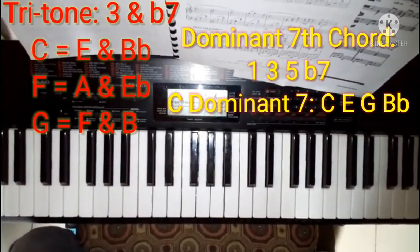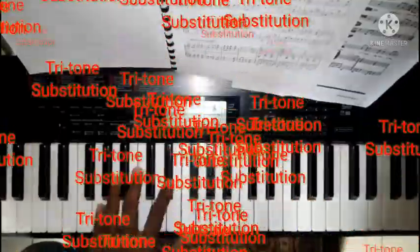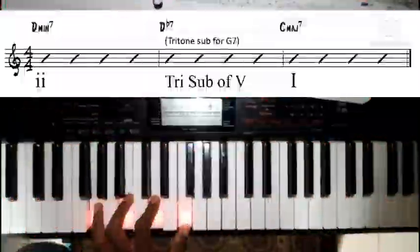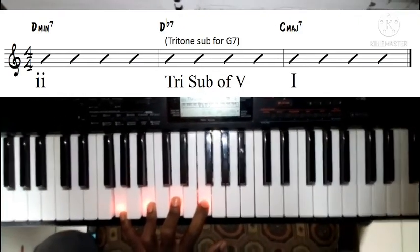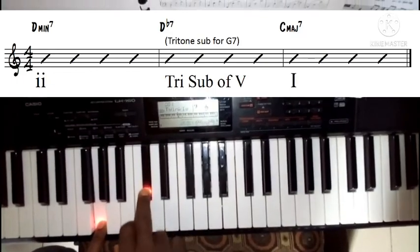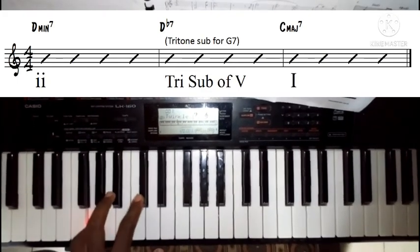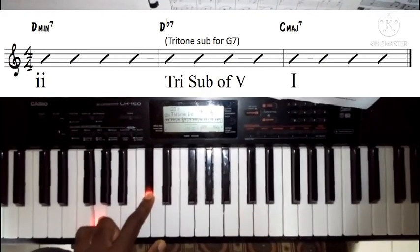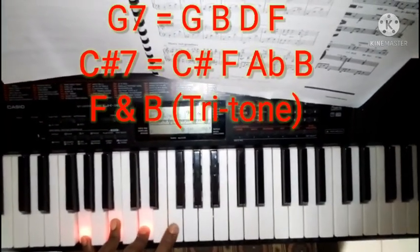The second way we can use it is called tritone substitution. Basically, the tritone for C is F sharp. Now let's look at our dominant chord — talking about the G7 for the key of C. Looking at the dominant, the tritone for G is this. If I want to play this, I can substitute this for this — I can replace it. The basic notes in my G7 are G, B, D, and F.